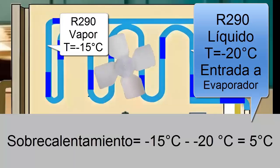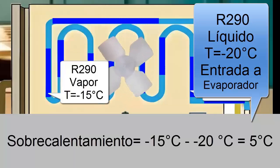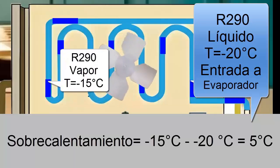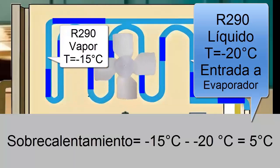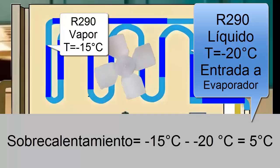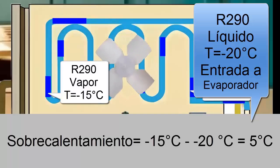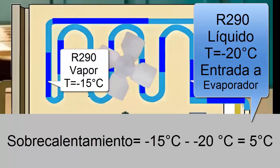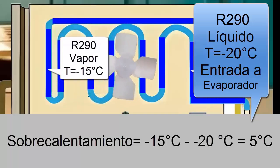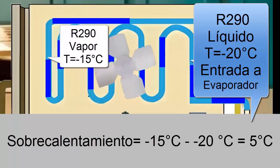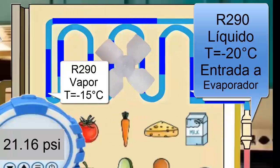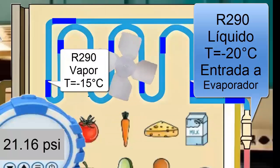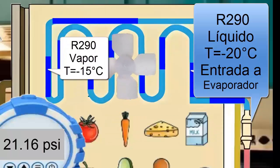Although the temperature undergoes a slight change, the same does not happen with the pressure, and we can approximate and say that the pressure of the R290 at the evaporator's exit is practically the same — it still amounts to 21 pounds per square inch.